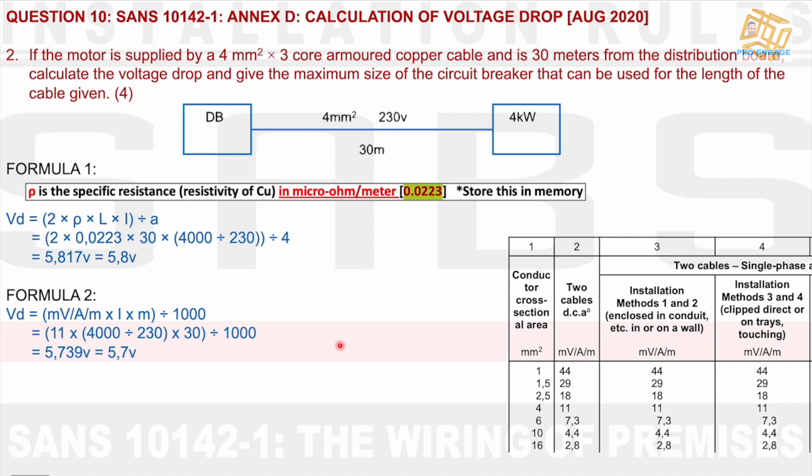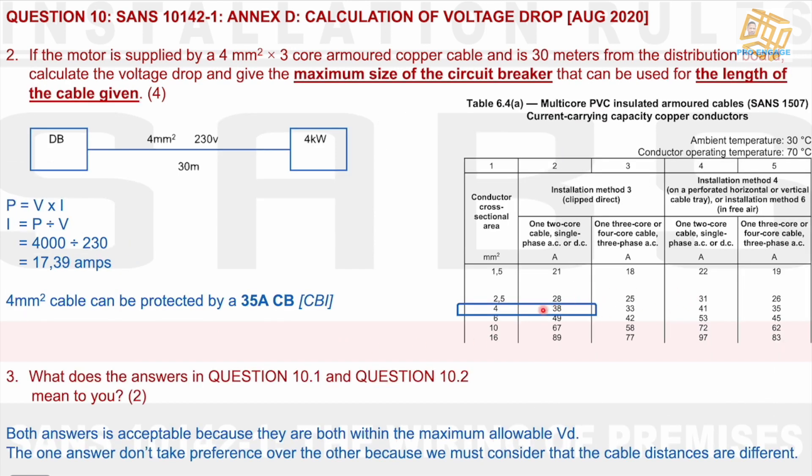What circuit breaker size do I need? Let's see. We are using 4 millimeters squared. And according to the table, if we use 4 millimeters squared, the maximum reliable amps is 38 amps. And I would then rather say 35 amps circuit breaker is closest to that. 35 amp.